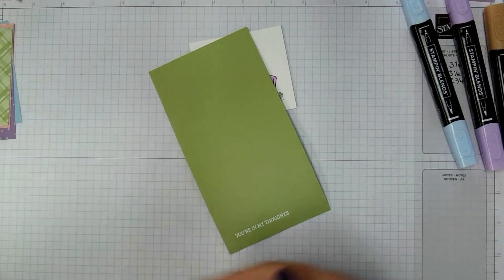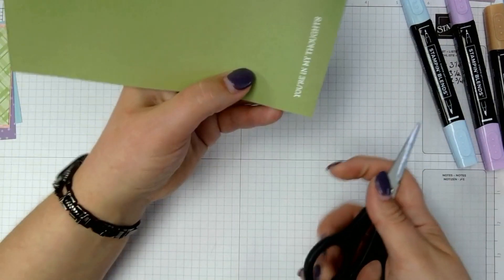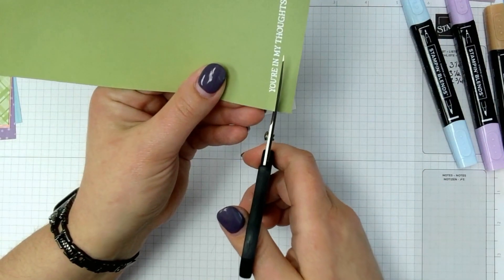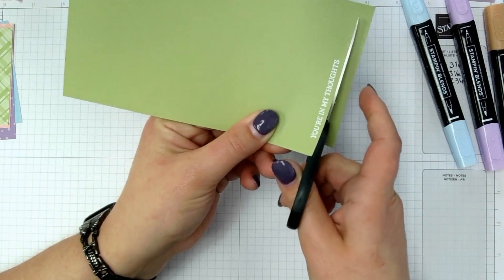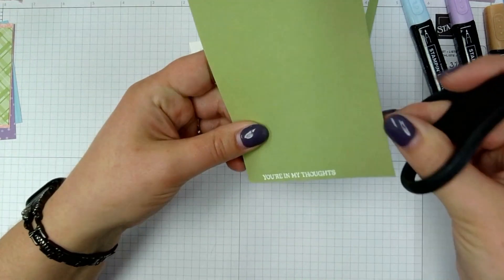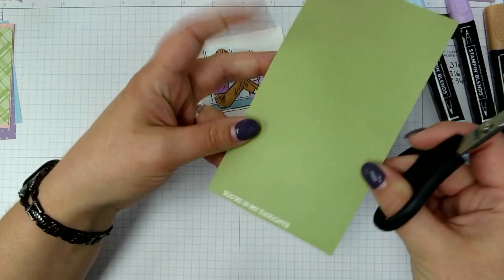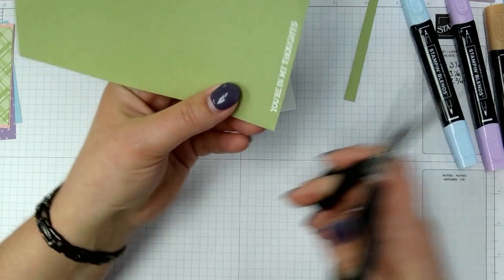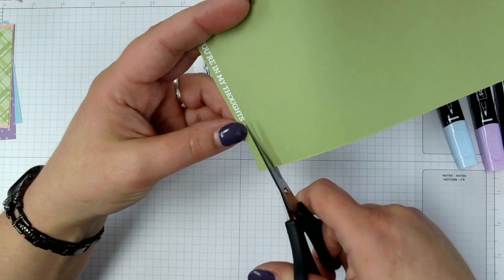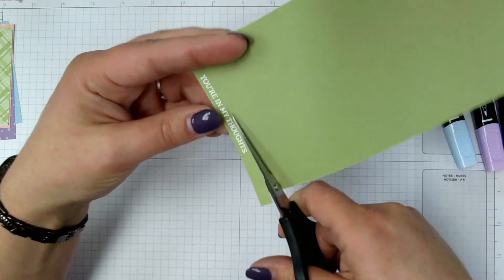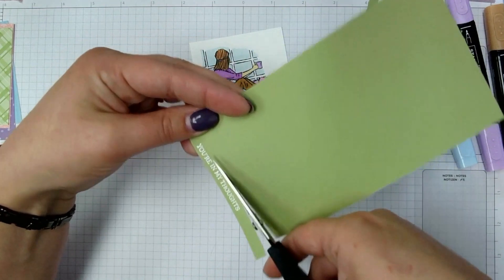Okay, so now I'm going to use my paper snips, and I'm just going to carefully trim this out of this huge piece. You could also use your paper trimmer, if you would rather, for this part. You'll get a straighter cut probably that way.